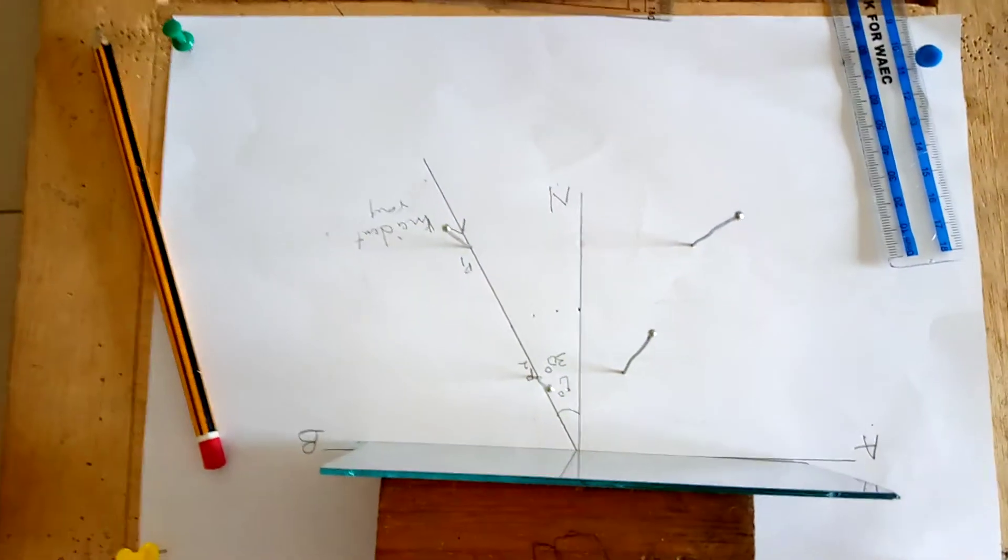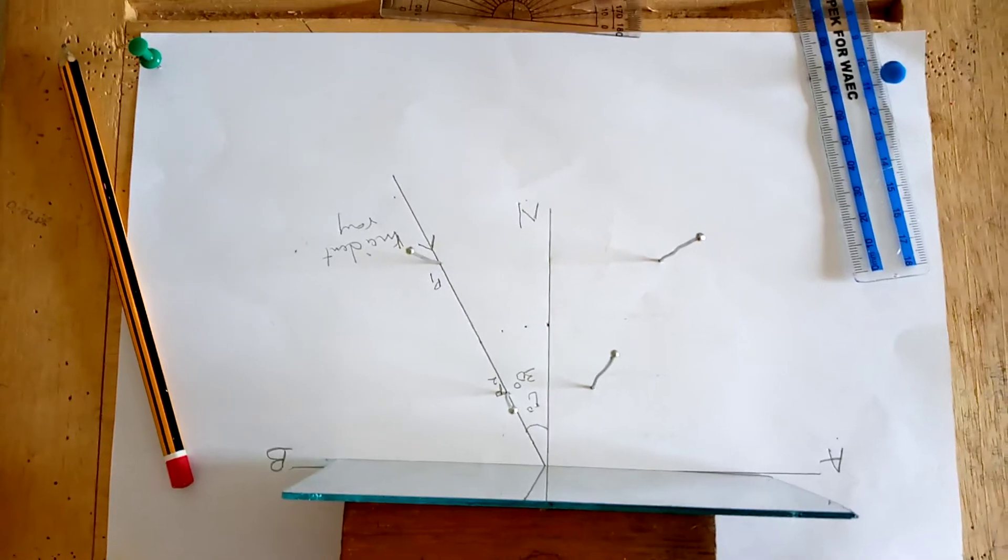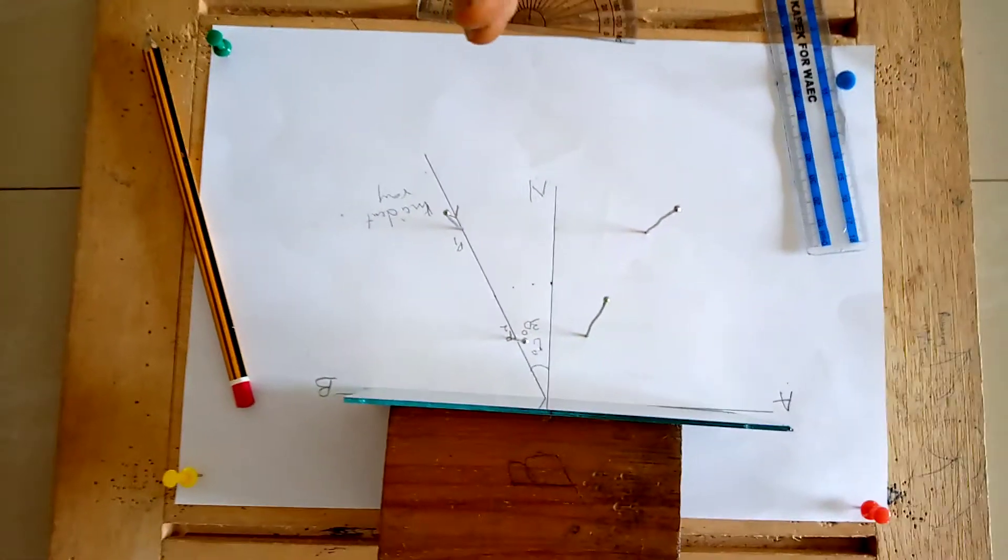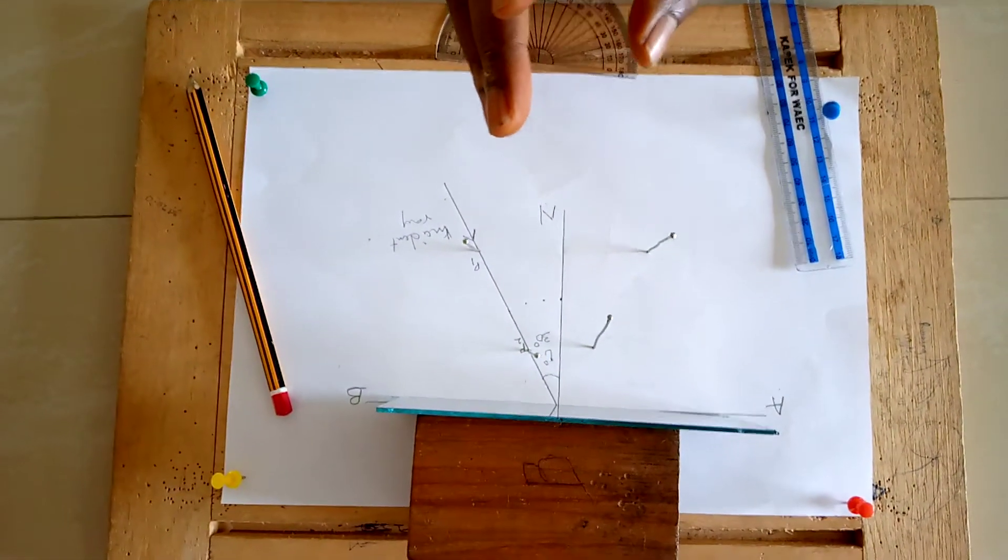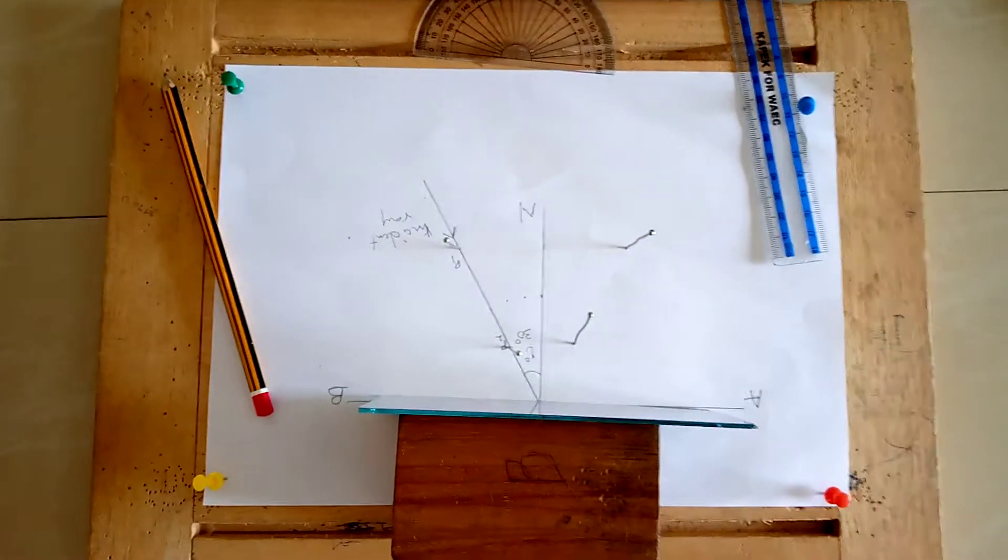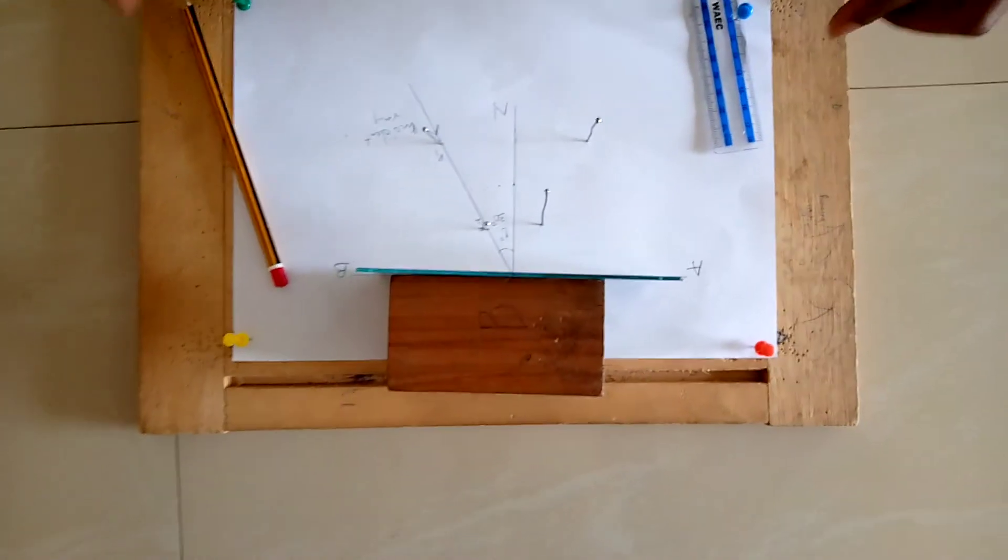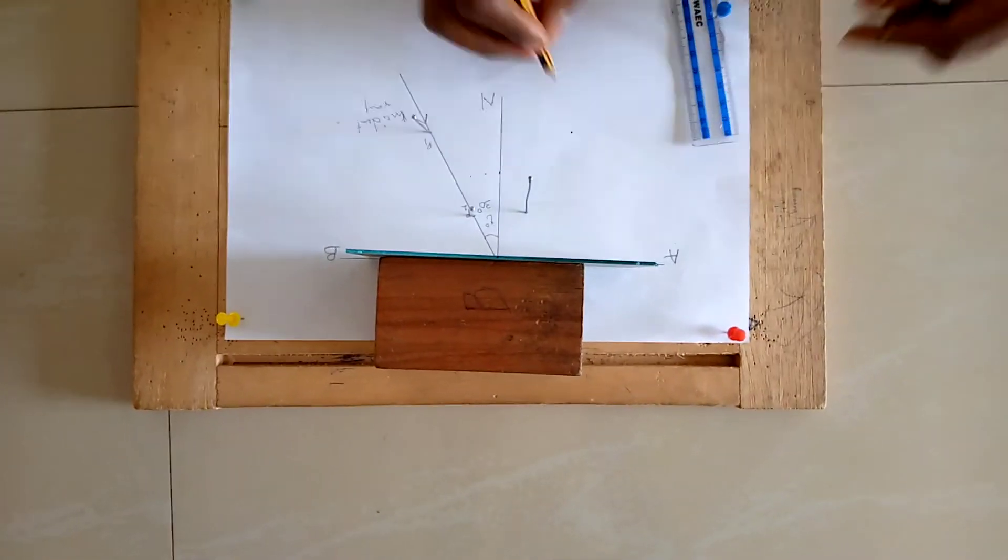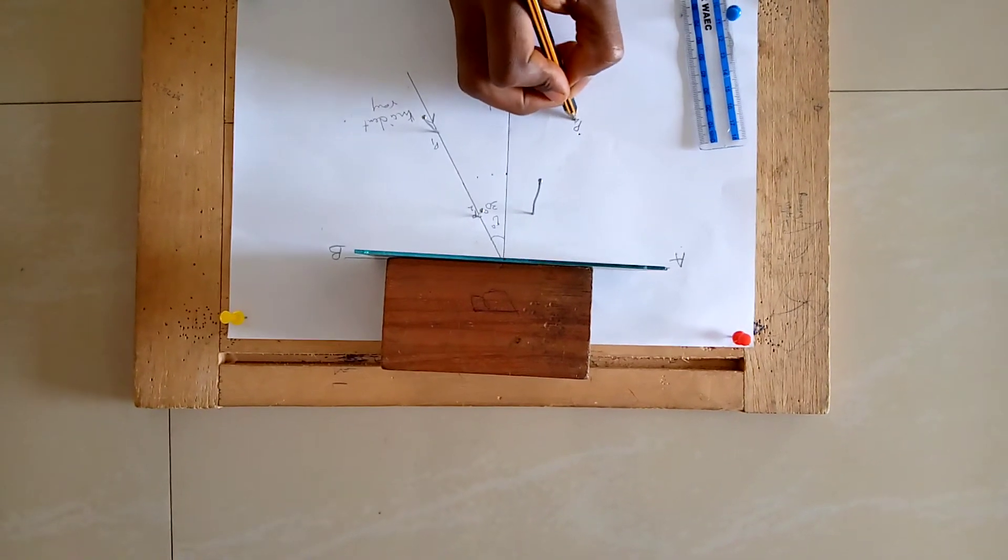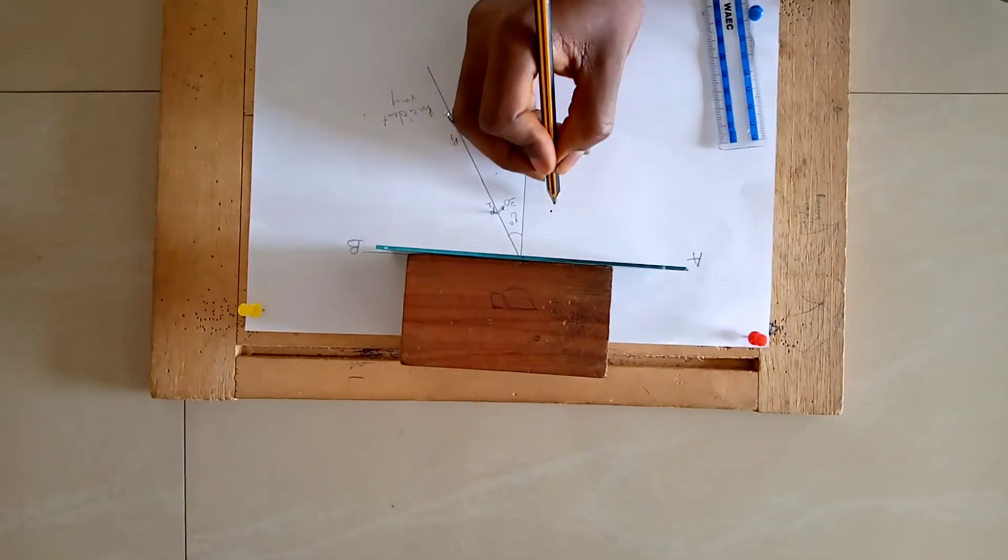Instead of seeing four pins, I am seeing only one pin, which is the last pin, which means that all four of them are aligned in a straight line. Then mark the point P4 and this one P3.